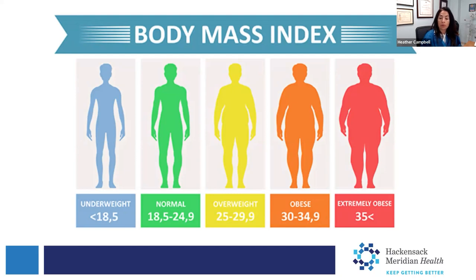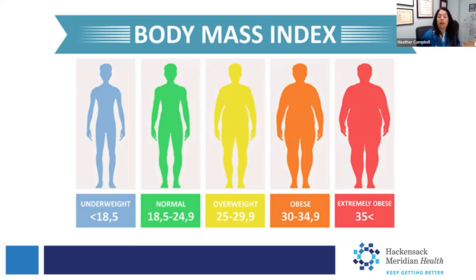The BMI is measured by dividing the weight in kilos by the height. A BMI over 25 is considered overweight, and patients are in the obese category once they're over 30. Morbidly obese is considered a BMI over 35.